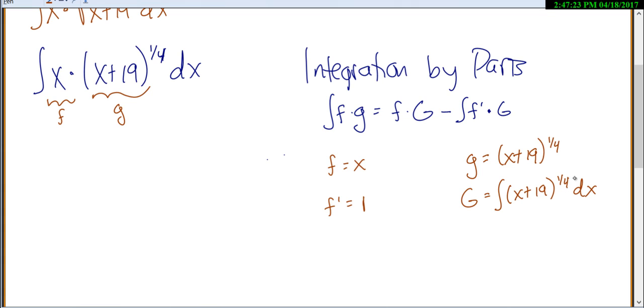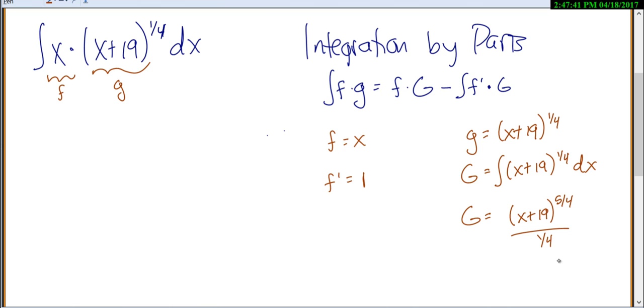Now at this point, you need to stop here and do u substitution. Do u substitution on your own, go ahead and try it. I'm just going to tell you what it would be. It would end up being (x plus 19) to the power of 5/4 divided by 5/4.